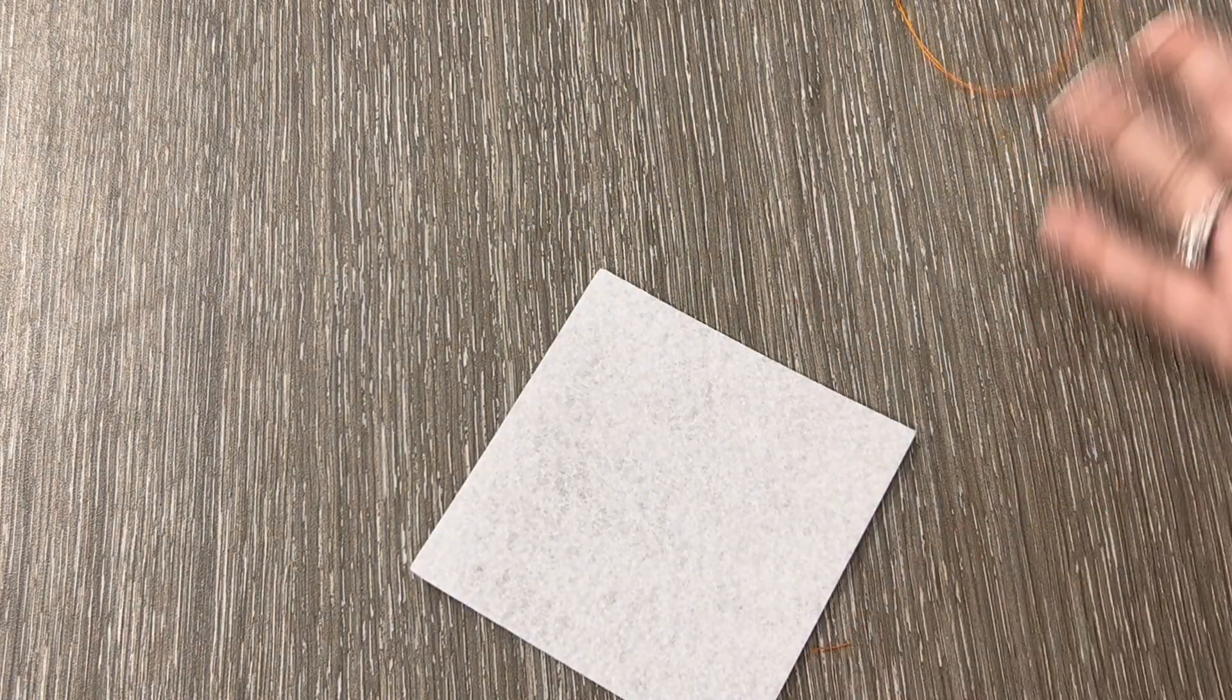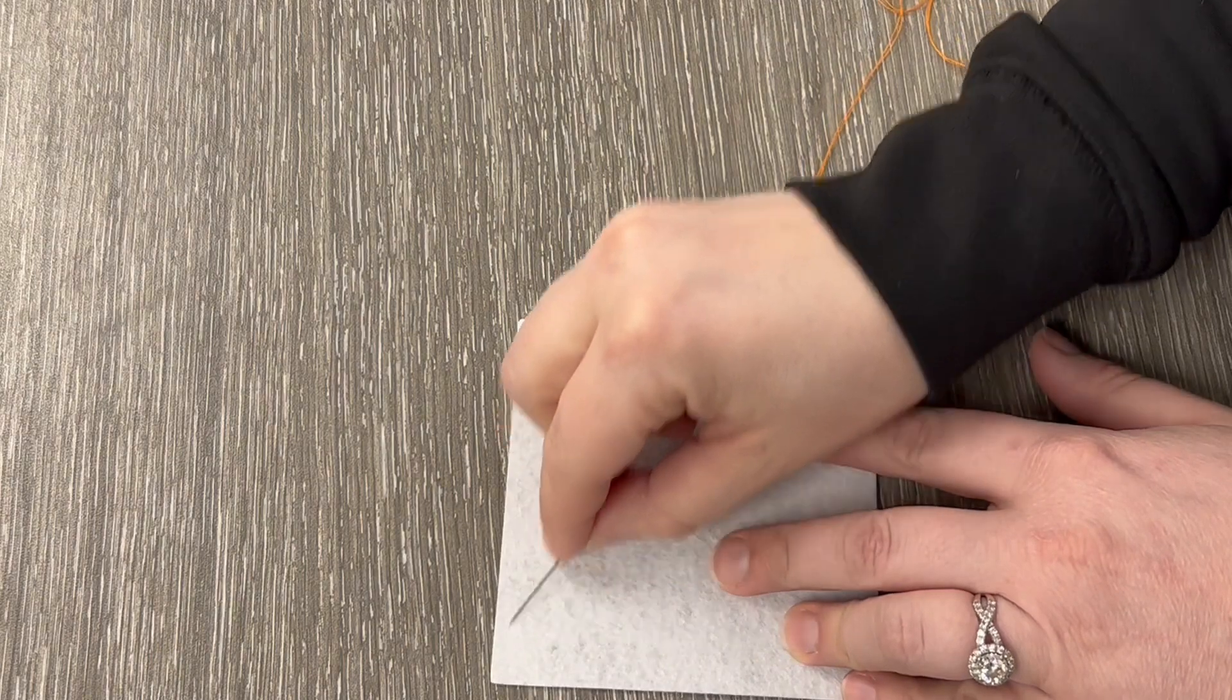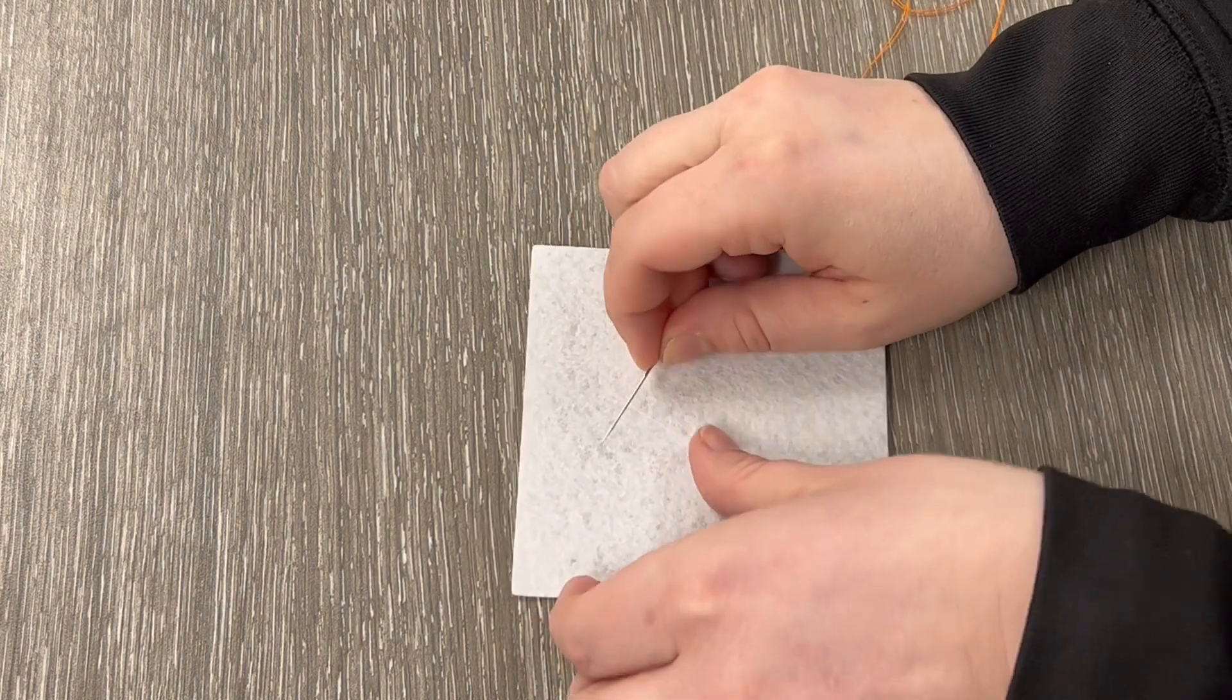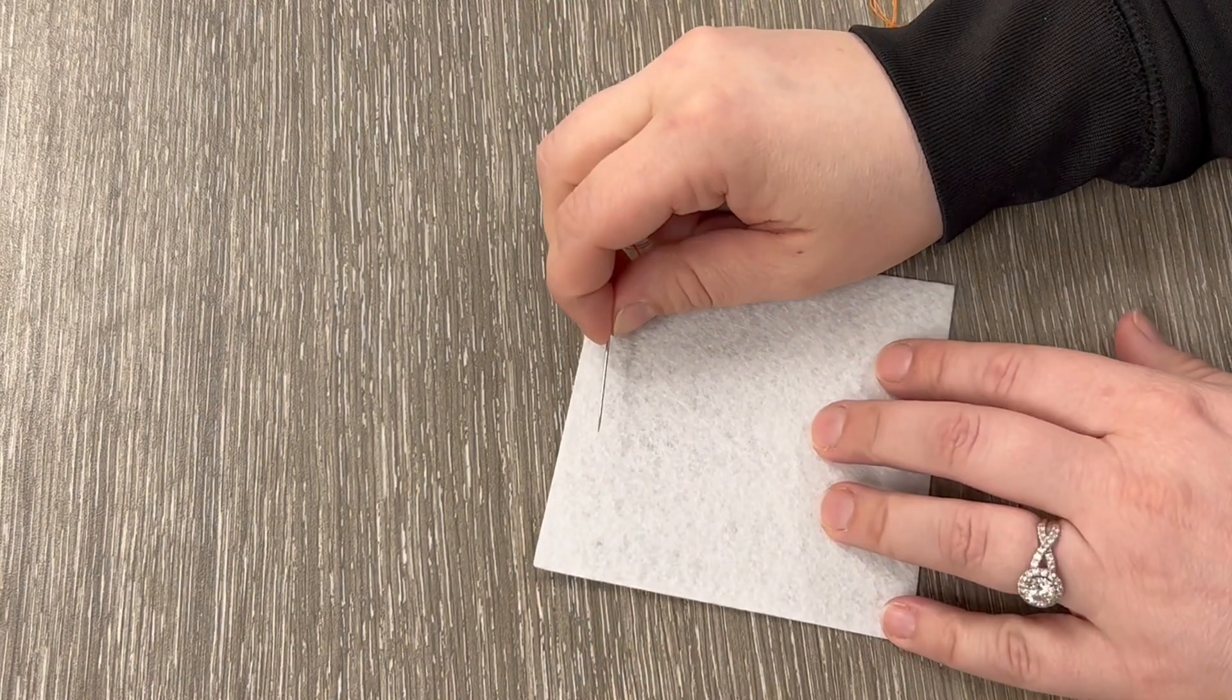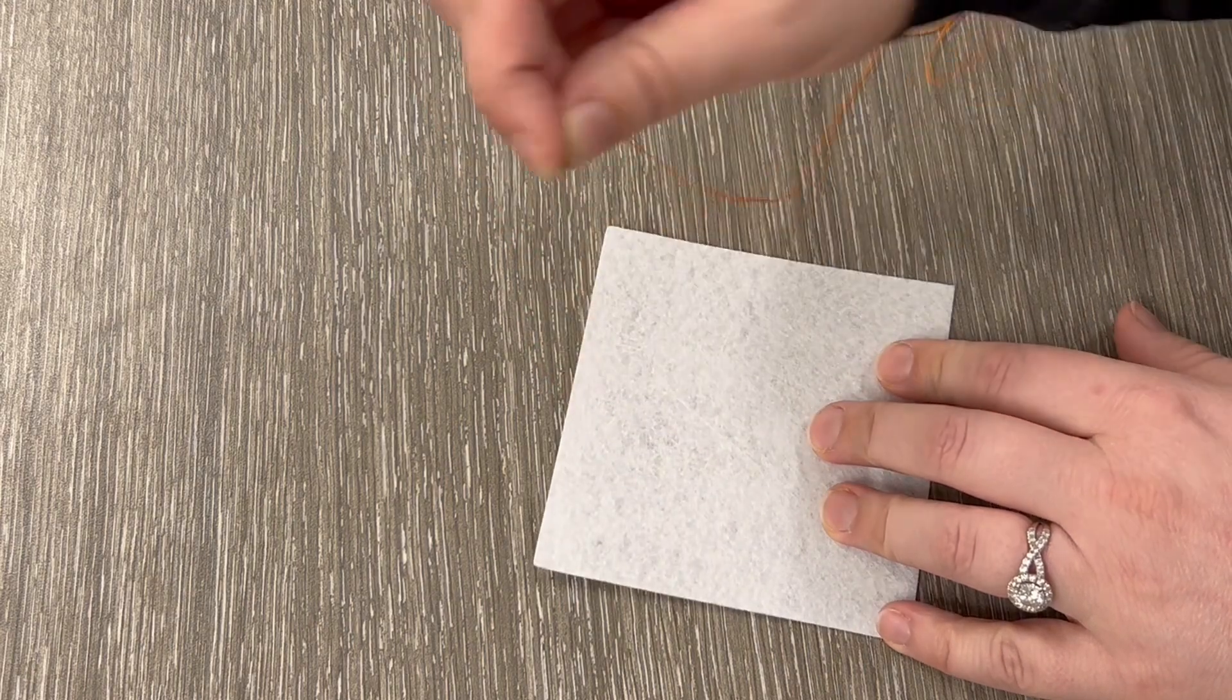All right, to do the blanket stitch we are just going to use the edge of our fabric and we are only going to go through the fabric once. We're going to go from the back to the front.